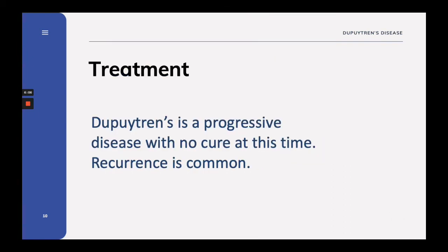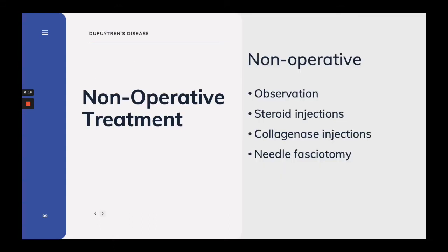It's important to note that Dupuytren's is a progressive disease with no cure at this time. Recurrence is common regardless of treatment, and setting expectations is key with Dupuytren's patients. The role of non-operative management has evolved over the years. Initially, observation is key, as isolated nodules without contractures do not always develop into cords, and cord contracture may be non-progressive. As the disease progresses, intralesional steroid injection of Dupuytren's nodules can be done, and this has been associated with softening or flattening of the nodules. Collagenase injections and needle fasciotomies may also be performed.